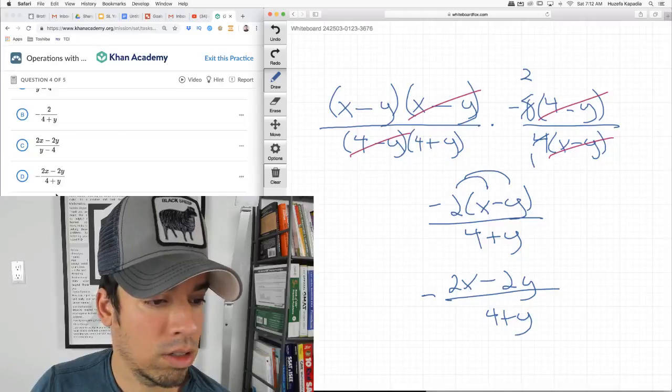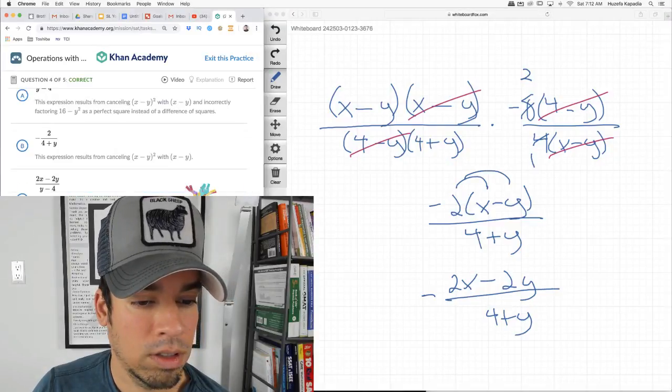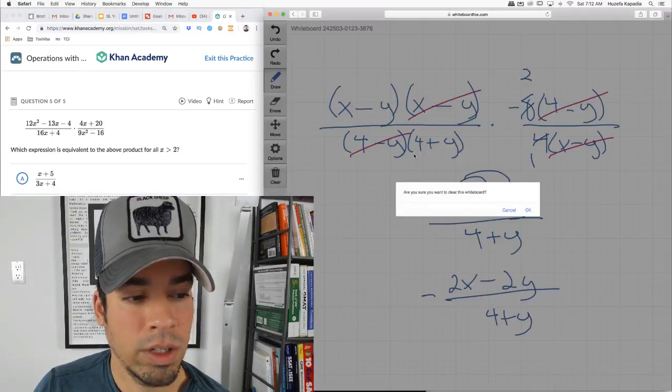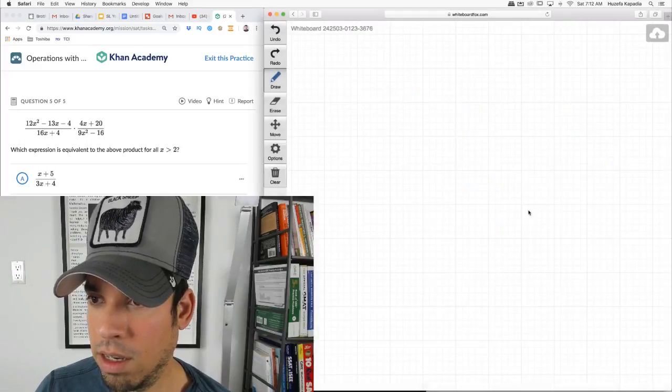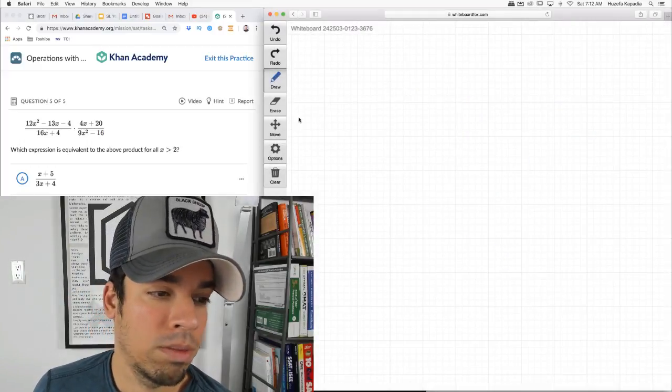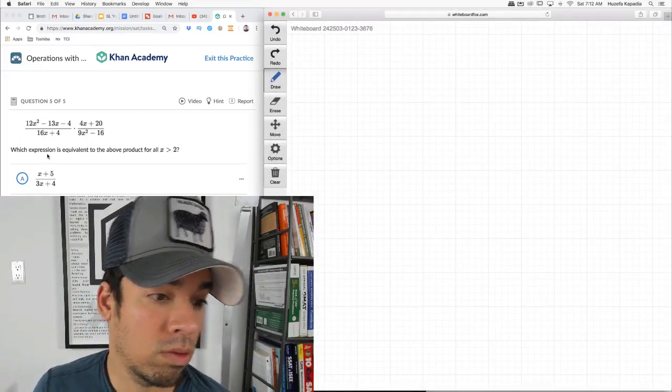It's this one. Because they just distributed and put the negative out front and made it 2x minus 2y over 4 plus y. Yes. Final question of the day. It's a big one.